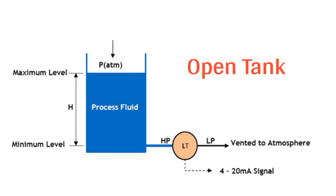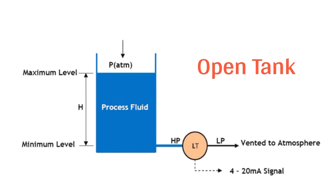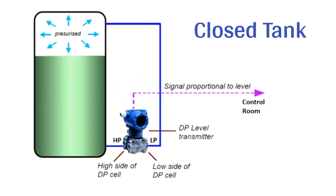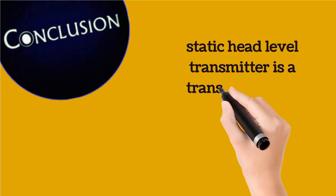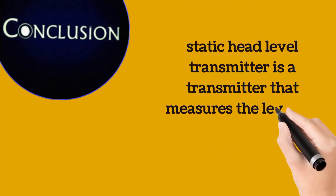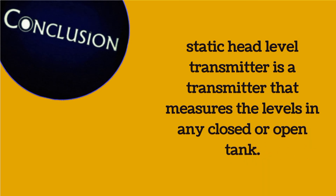For an open tank, the pressure exerted at the bottom depends on the liquid level or liquid height. Similarly, for a closed tank, the pressure at the bottom depends on the liquid level. Therefore, a static head level transmitter is one that measures the level in any closed or open tank.